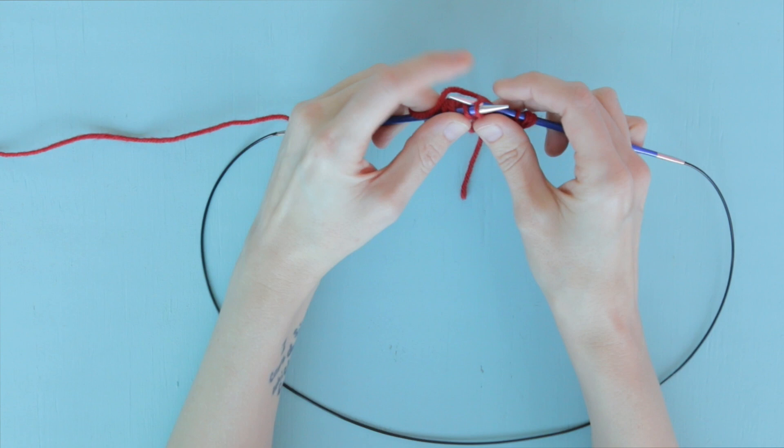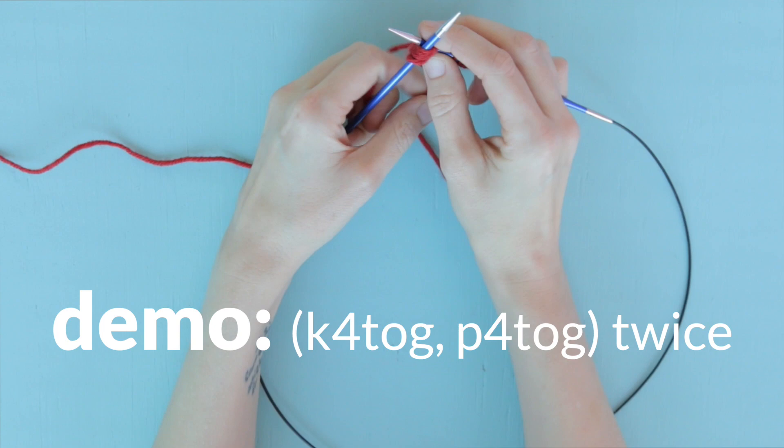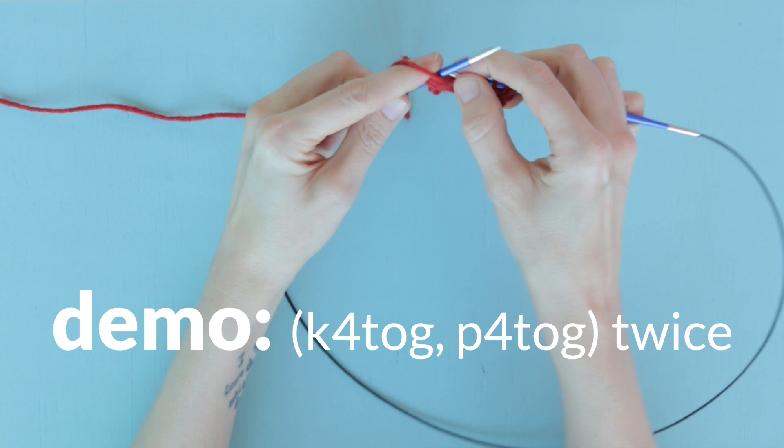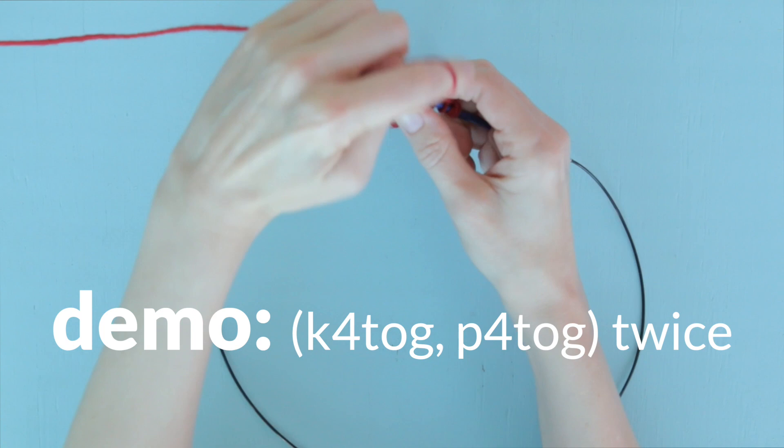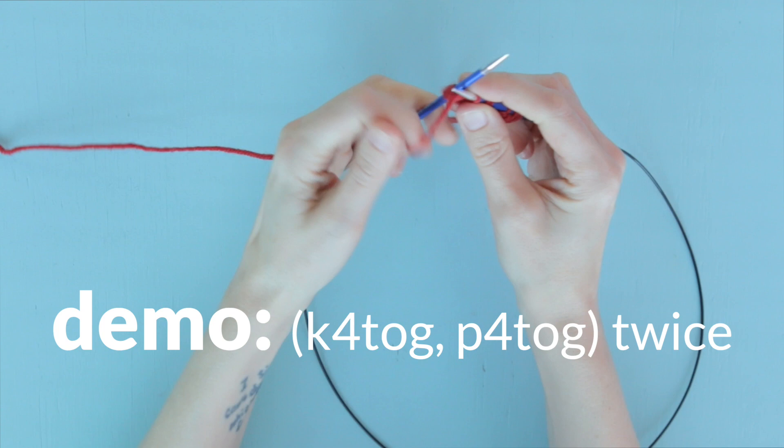Now, just like before, knit four together through all four of those long loops. And now bring your yarn to the front. Inserting your needle behind it, purl four together. Bring the yarn to the back, knit four together in those same four loops.